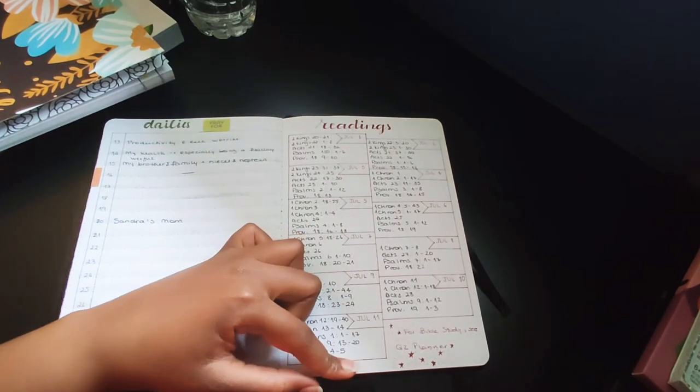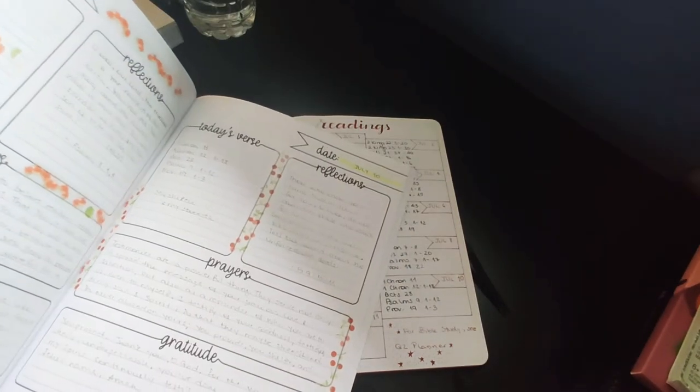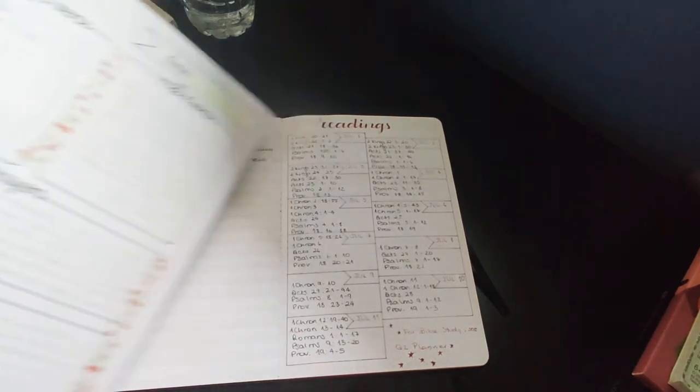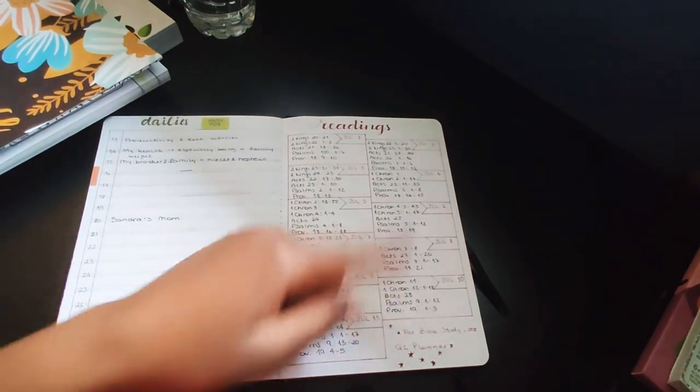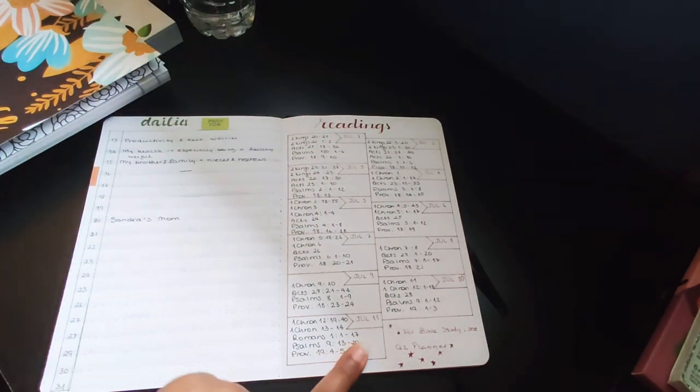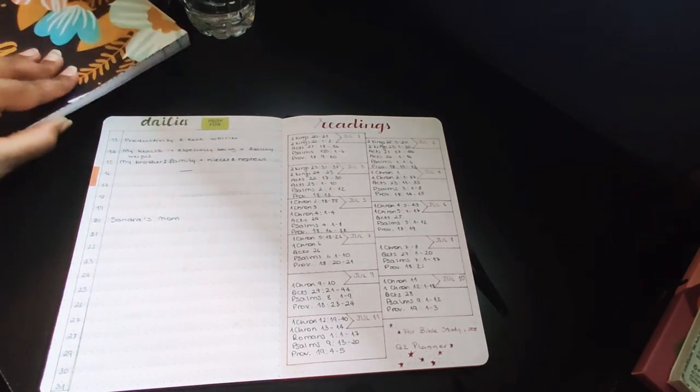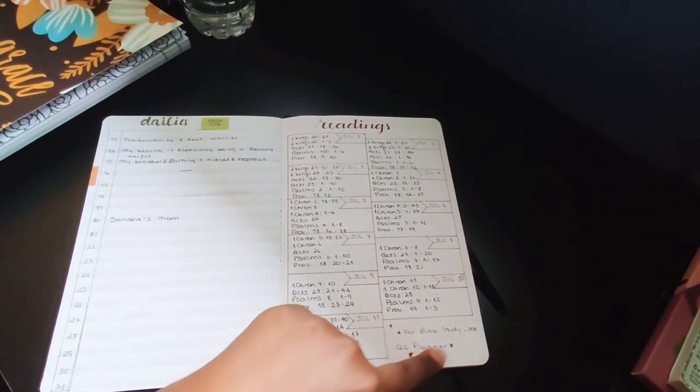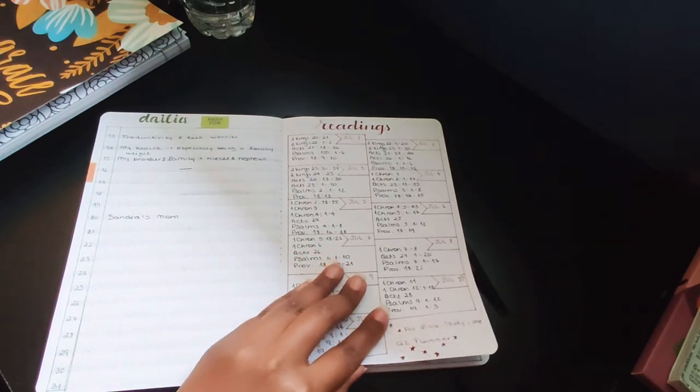And then on this page, because this old journal ran into July, I didn't want to waste the pages in here so I used them. But I also wanted to track that I have read from July 1st to July 10th, actually July 11th. So it doesn't look like I just skipped and started on July 12th. So I wrote the verses that I read here and I wrote they should look in my other planner for the Bible study notes.